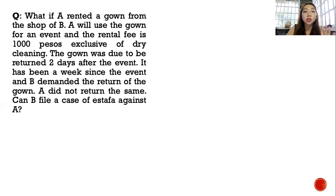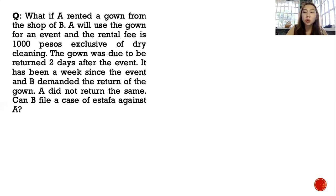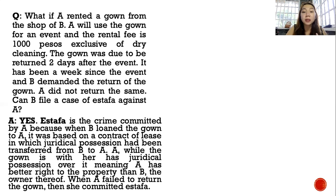Example: A rented a gown from the shop of B. A will use the gown for an event and the rental fee is 1,000 pesos exclusive of dry cleaning. The gown was due to be returned two days after the event. It has been a week since the event and B demanded the return of the gown; A did not return it. Can B file a case of estafa against A? Yes — when B loaned the gown to A based on a contract of lease, juridical possession was transferred from B to A. A has juridical possession over the gown — meaning A has better right to the property than B, the owner. When A failed to return the gown, she committed estafa.